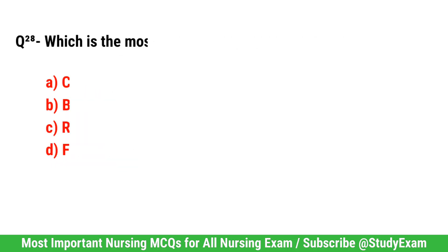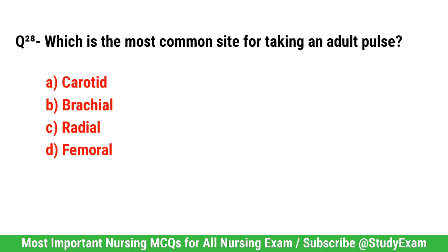Question number 28. Which is the most common site for taking an adult pulse? Correct option is C. Radial.